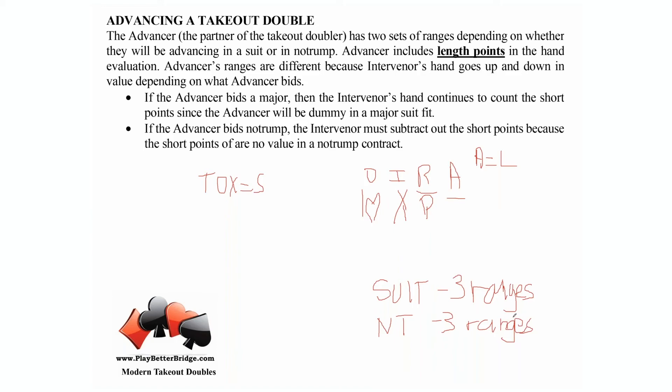Even if you've got longer minors, always bid your four-card major. If your partner makes a takeout double and you have four cards in the unbid major, you bid that major. Even if you have a six-card minor suit, the key is to bid that four-card major.